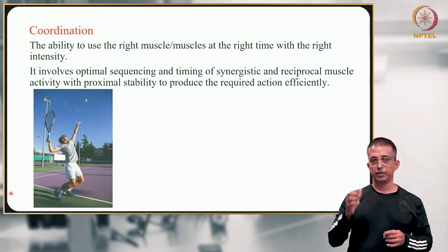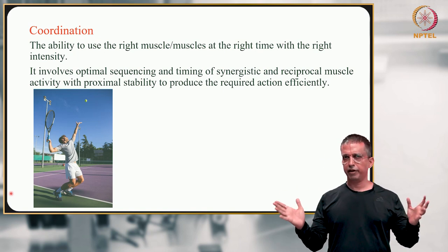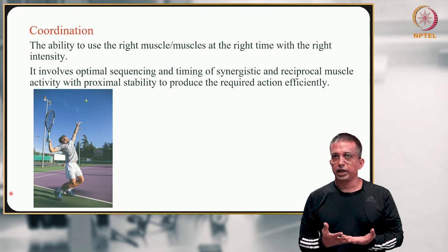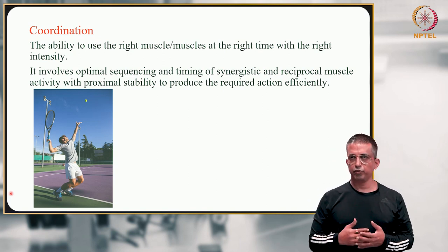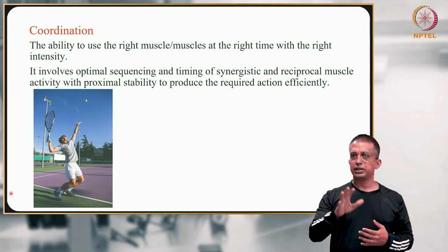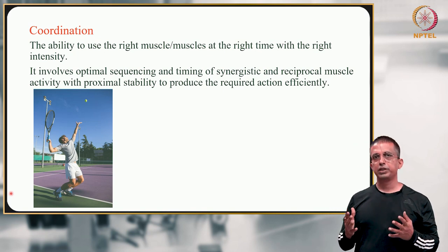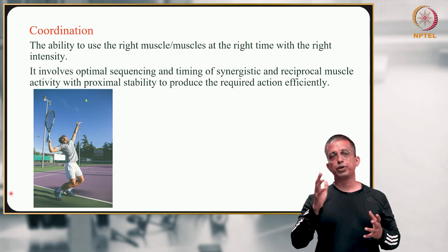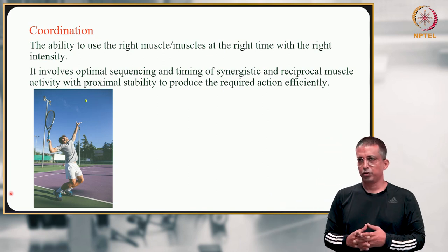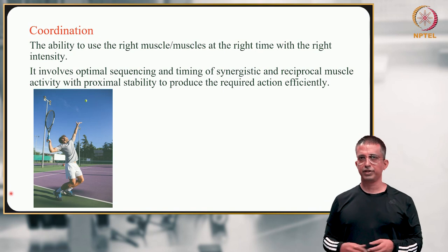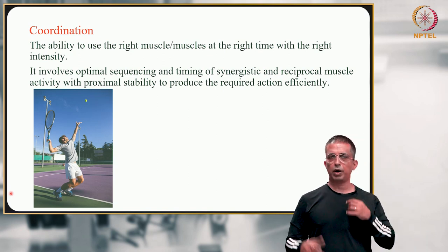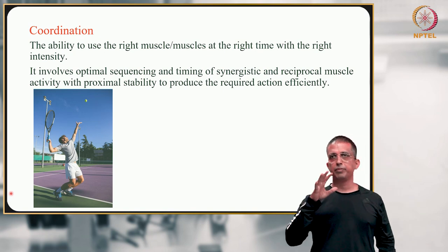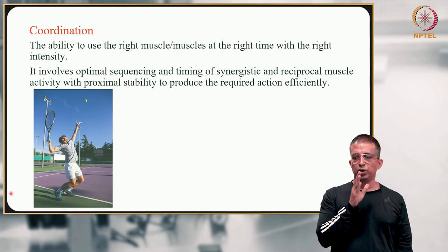To explain this simply: optimal sequencing means everything takes place at a certain pace and falls into place. Timing of synergistic muscles — those creating the movement — and reciprocal muscle activity, where agonist and antagonist muscles work together, with proximal stability meaning stability around the core. Everything is happening to produce an action which is efficient. Ultimately, we want efficient action — if the action is not efficient, all the strength, coordination, and power in the world really doesn't help much. Coordination is where everything works together to get a movement done.